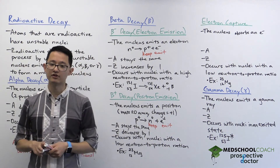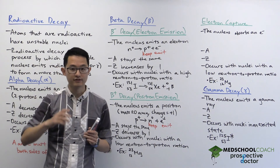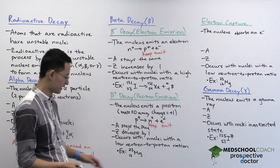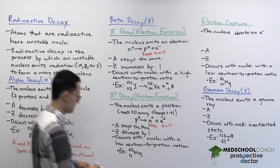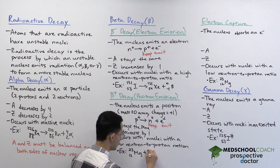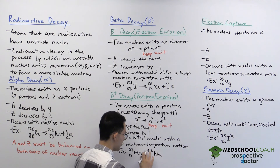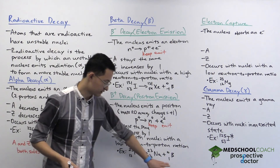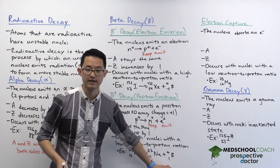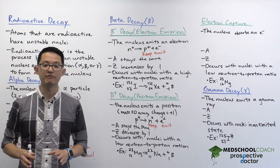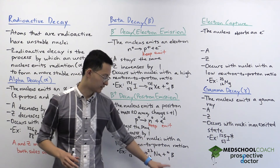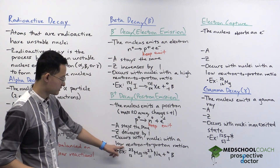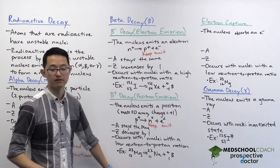Since we're converting protons into neutrons, this is the opposite situation from beta minus decay — a nucleus with too many protons or a low neutron-to-proton ratio. Looking at the example, 23 magnesium undergoes beta positive decay to form 23-11 sodium, as well as a positron. In the notation for the positron, the mass number is zero but the atomic number is one. Even though the atomic number is one, it does not mean we have a proton — it's still a positron, and we know that because the mass number is zero. The one is there just for balancing purposes. Mass numbers and atomic numbers are equal on both sides.